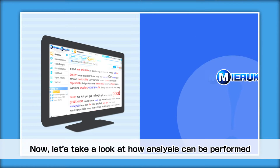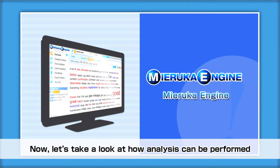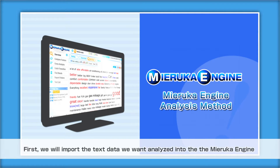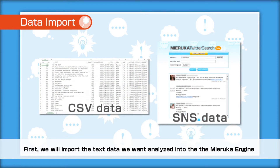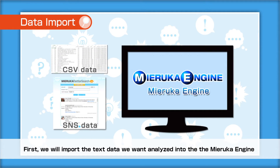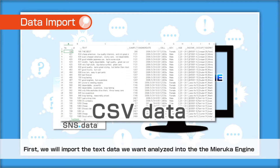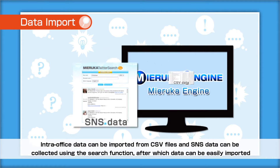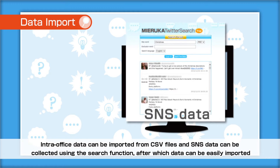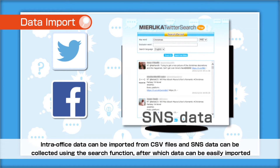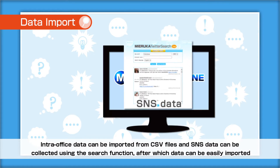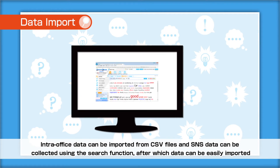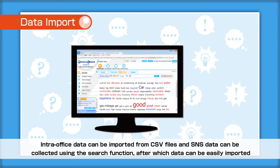Now let's take a look at how analysis can be performed. First, we'll import the text data we want analyzed into the Mierka Engine. Intra-office data can be imported from CSV files, and SNS data can be collected using the search function, after which data can be easily imported.